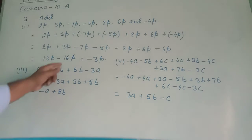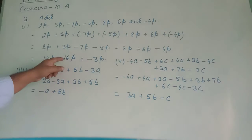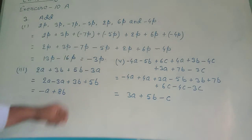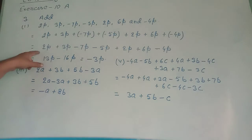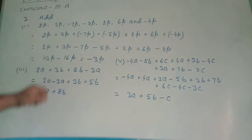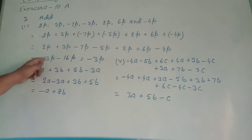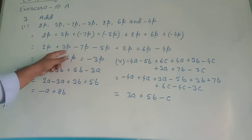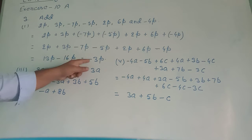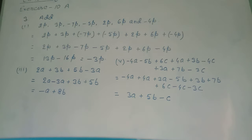The sign of the greater number comes. I repeat: there is a big chance to make a mistake here. Plus minus means we will subtract smaller from greater: 16p minus 13p equals 3p. The greater term 16p has a minus sign, so the answer became minus 3p.